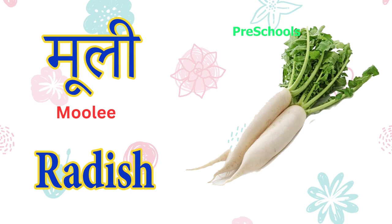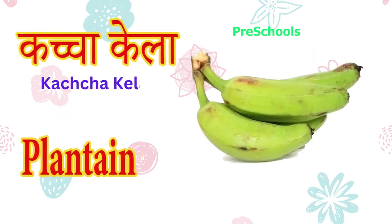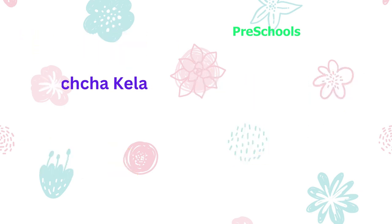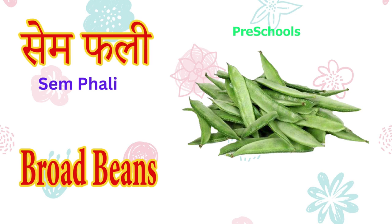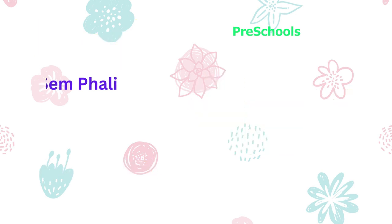Mooli matlab — radish. Kacha kela matlab — plantain. Torayi matlab — ridge gourd.